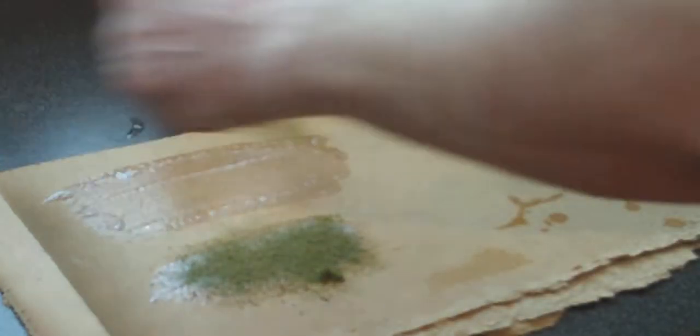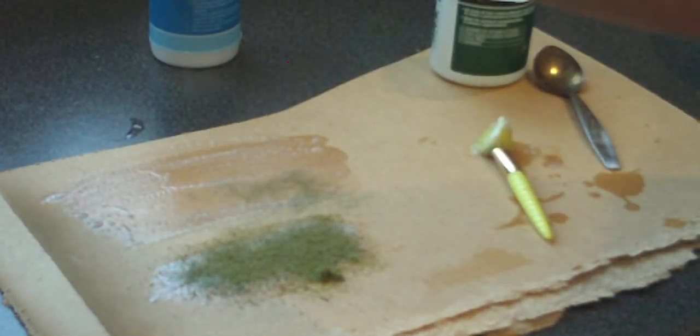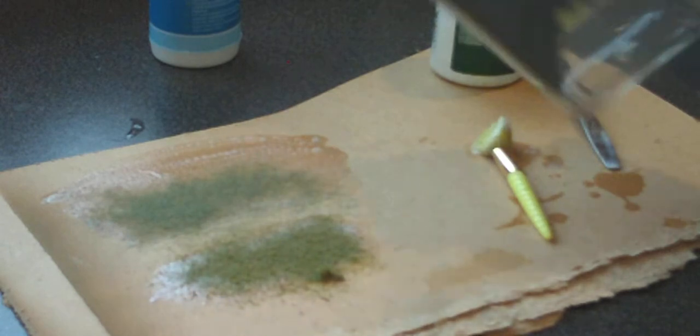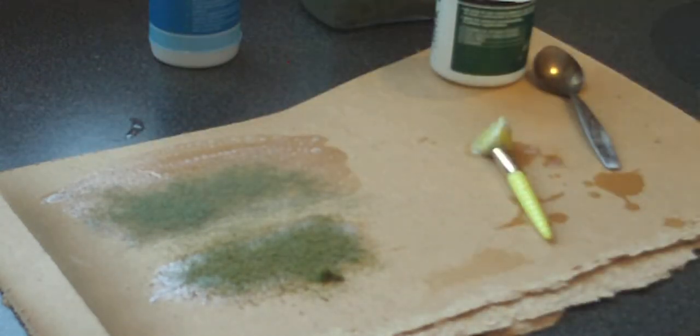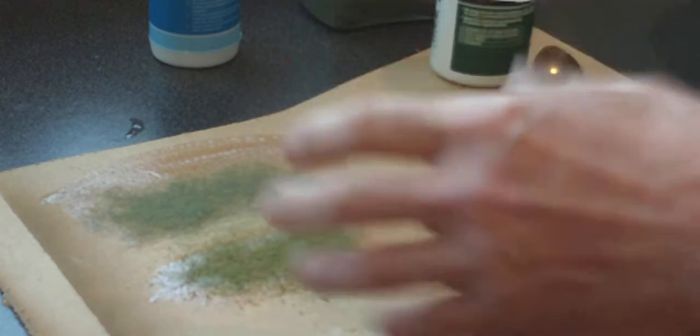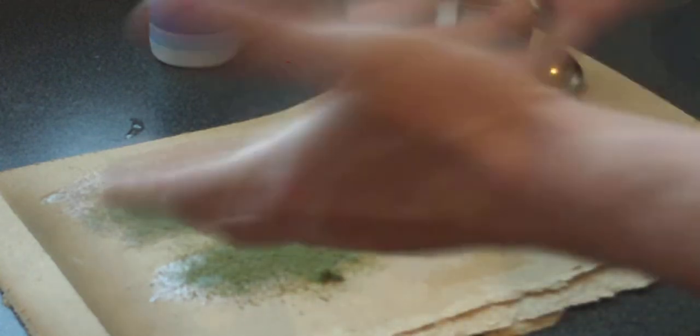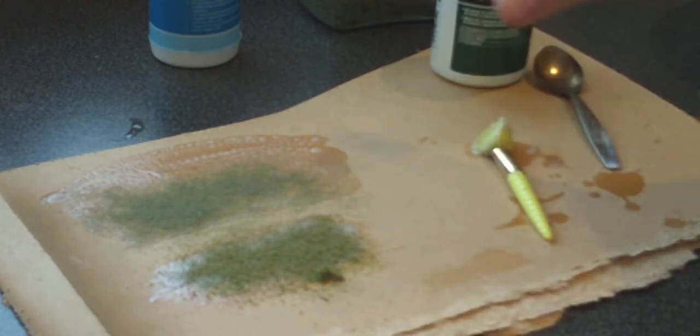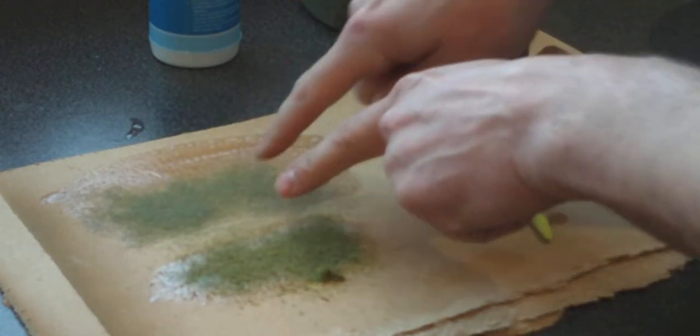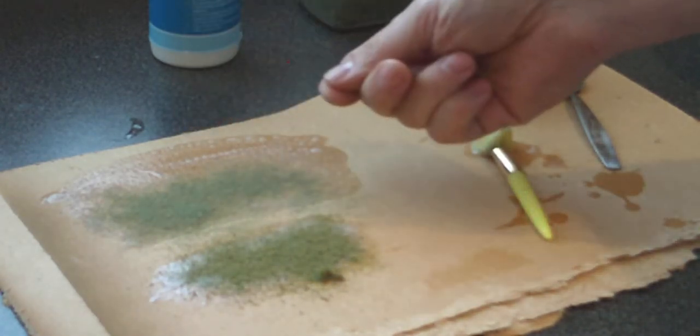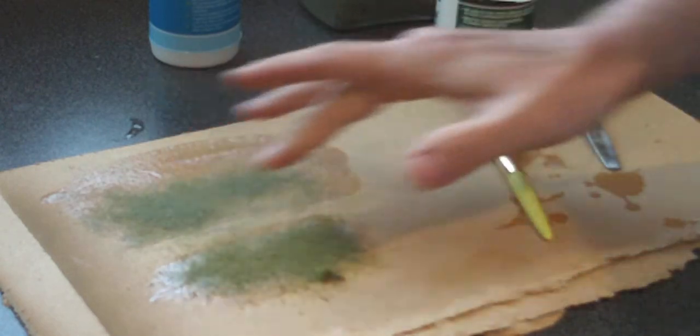I've just put the glue on with the PVA-water-washing up liquid mix, then tap the shaker upside down until all the wood where I need it is covered. Usually I paint the board brown underneath or a darker green, so if you get any bits missed it doesn't matter - you've got earth or grass color showing through.